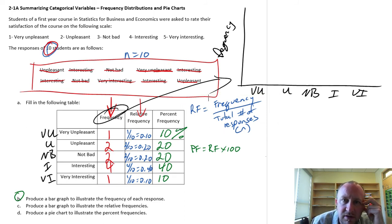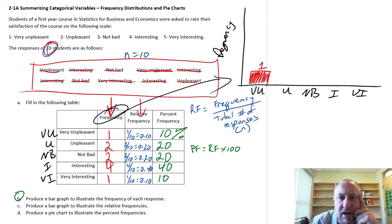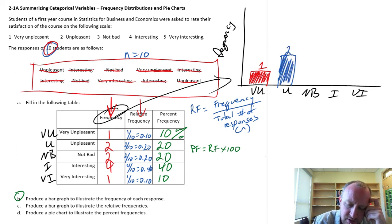Now I just have to transcribe these values over to my graph. For the number of students who found it to be very unpleasant, here we just have one. So I'll make this bar relatively short, fill it in, and I'm going to put the data labels on here too. Unpleasant, here I have two students. So I'll make that roughly twice as tall. Not bad, this was also two students, so same height.